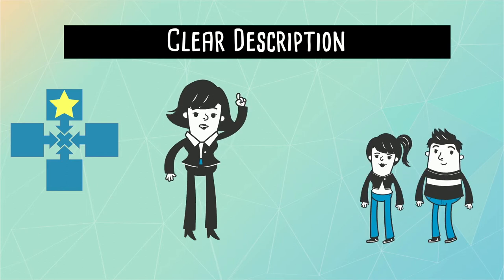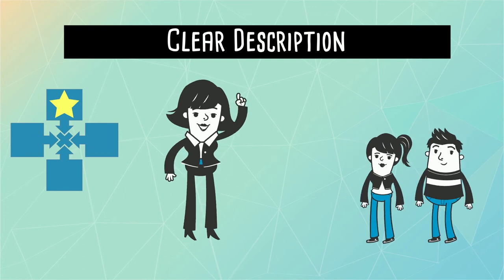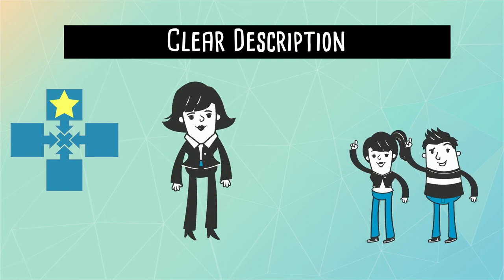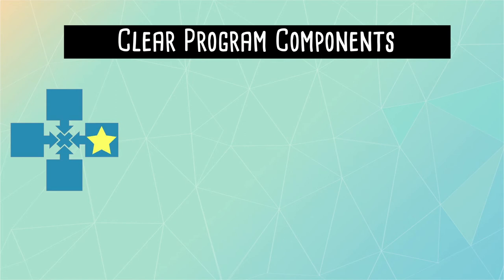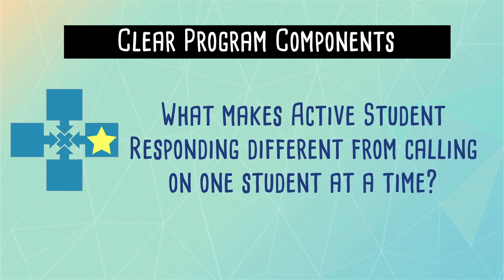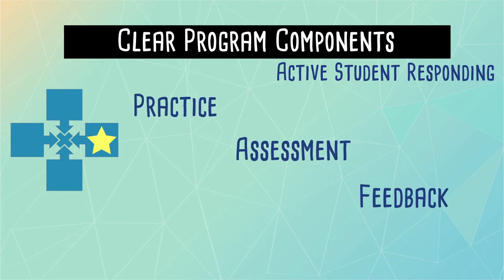Active student responding has been shown to be effective with students across all grade levels, ability levels, races, and socioeconomic levels in all subject areas. Now that we know the values and principles of ASR, we need to identify the program components. What makes ASR different from calling on one student at a time? ASR includes three core components — practice, assessment, and feedback — for groups of students at the same time.